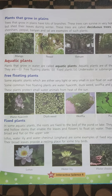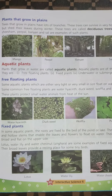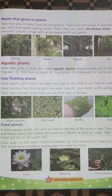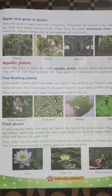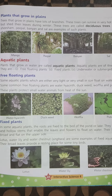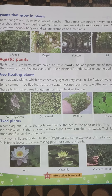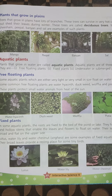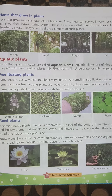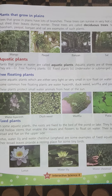Plants that grow in plains — trees that grow in plains have lots of branches. These trees can survive in very hot climate but shed their leaves during winter. These trees are called deciduous trees.